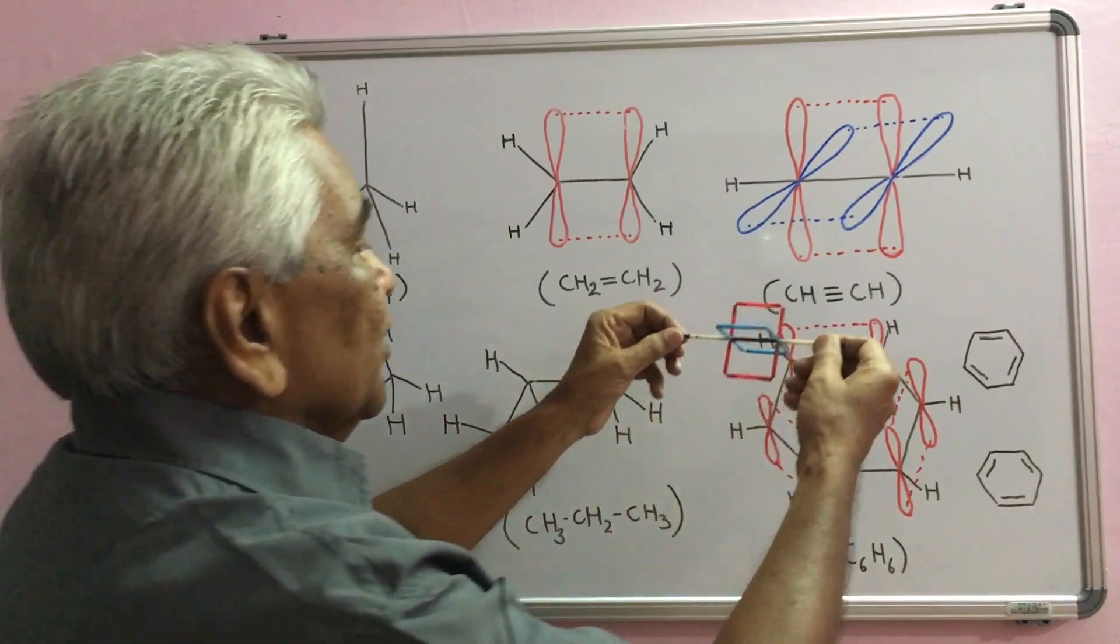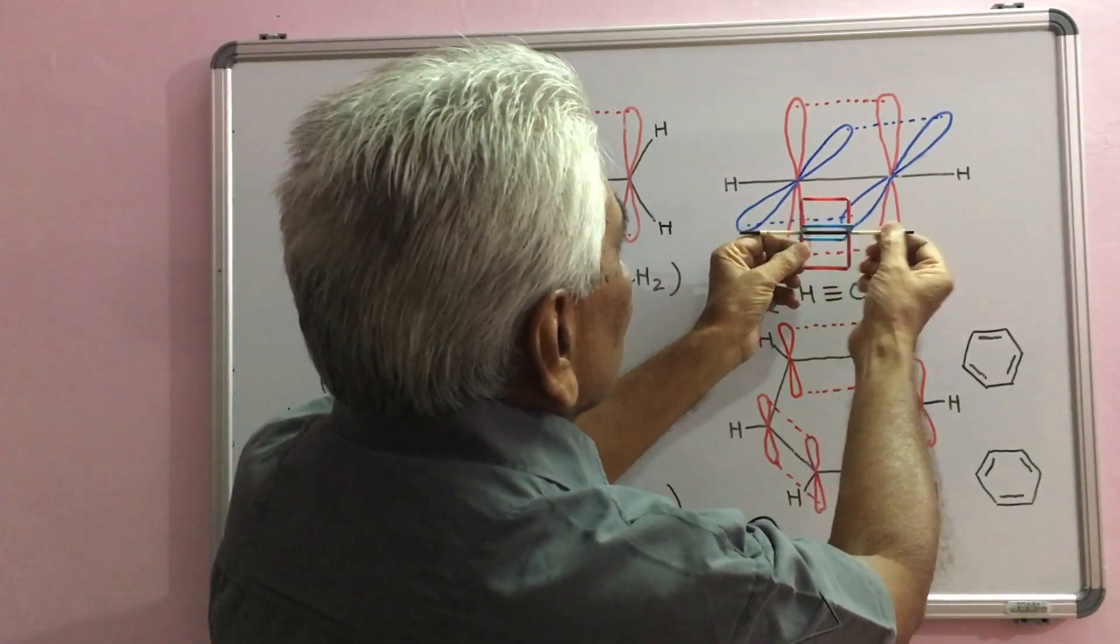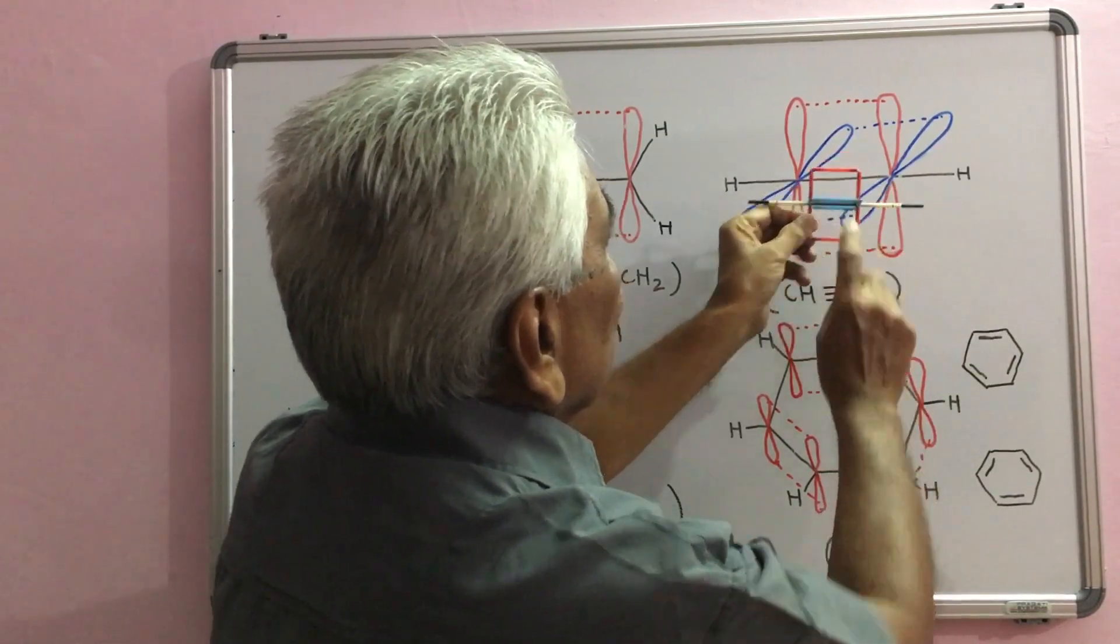This is acetylene molecule. One CH bond, one CH bond, one CH bond, this is CC bond.